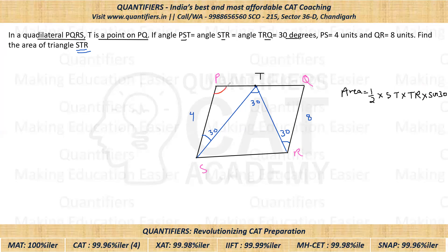Let me take the angle PST as theta degrees. For triangle PST, the angle at T on the other side — angle STR extended — would be the exterior angle of T. By the exterior angle property, that exterior angle equals the sum of the opposite interior angles, which is 30 + theta. That means angle RTQ equals theta.